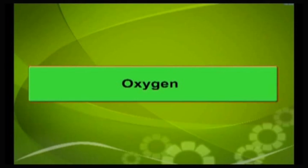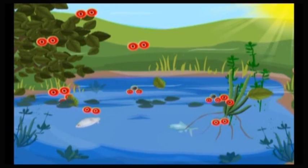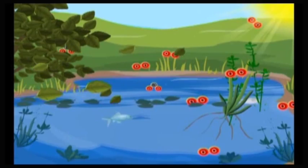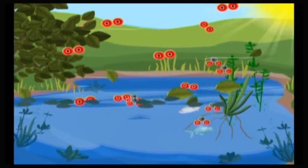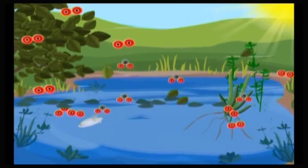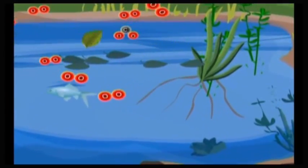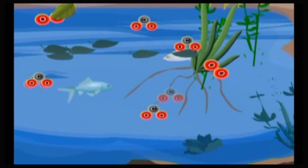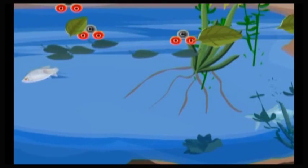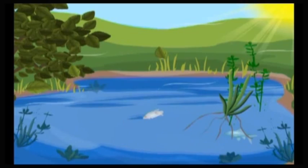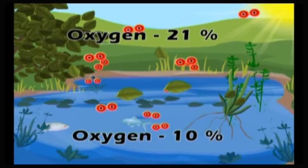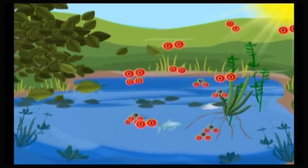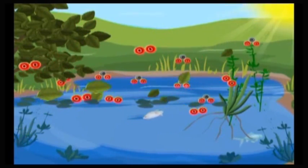Oxygen: Aquatic organisms require oxygen for respiration, but they cannot use the oxygen present in air. They use oxygen dissolved in water. Oxygen dissolved in water comes from two sources: from air and from photosynthesis by aquatic plants. Oxygen present in air dissolves in water, but the solubility of oxygen in water is very low. Oxygen content in air is 21% while that of water is not more than 10%. Deeper layers of water get their oxygen by diffusion from surface layers.